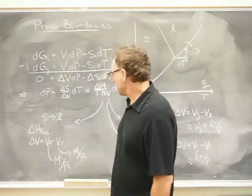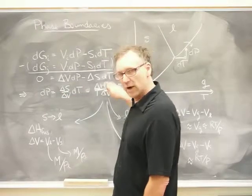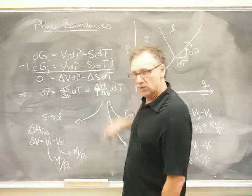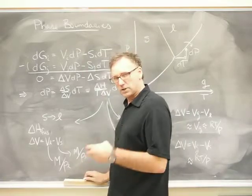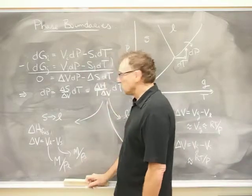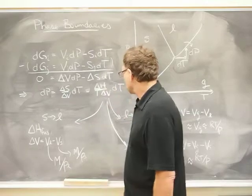Namely, the change in entropy at a given temperature is equal to q_rev over T. And since we're also at a constant pressure for these transitions, then we would say that that's equal to delta H over T.